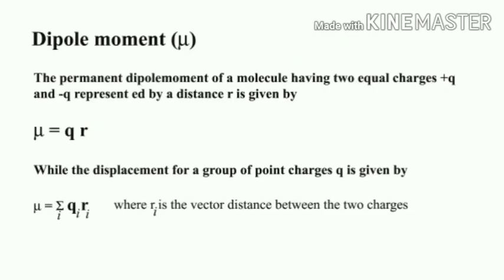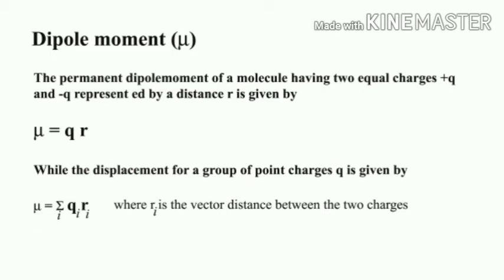The permanent dipole moment, denoted by mu, of a molecule having two equal charges +q and −q separated by a distance r is given by mu = q × r. The dipole moment for a group of point charges, denoted by k, is given by mu = summation of q_i × r_i, where r_i is the vector distance between the two charges.